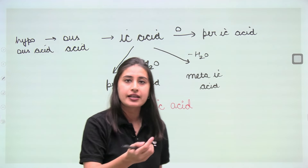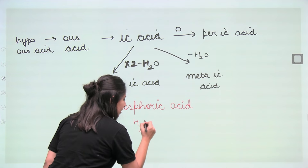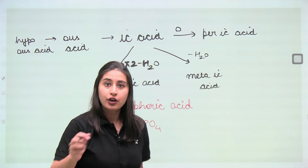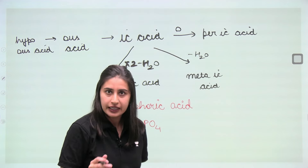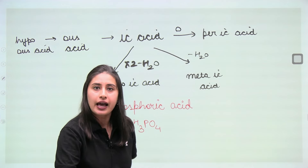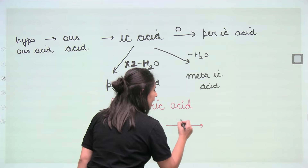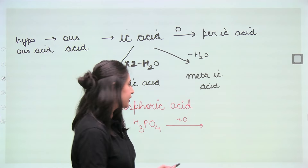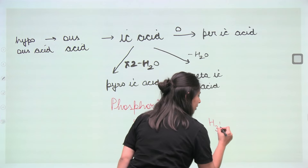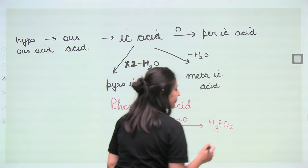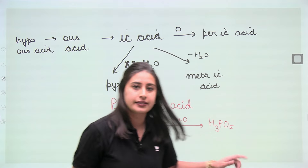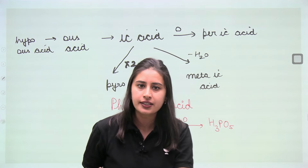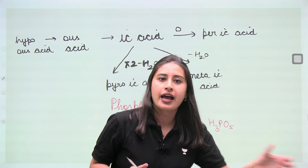H2SO4 is sulfuric acid and H3PO4 is phosphoric acid. When you take one such acid — like iodic acid or bromic acid — and add one oxygen to it, what do you get? A per-acid. So H3PO5 becomes per-phosphoric acid. Do you understand?